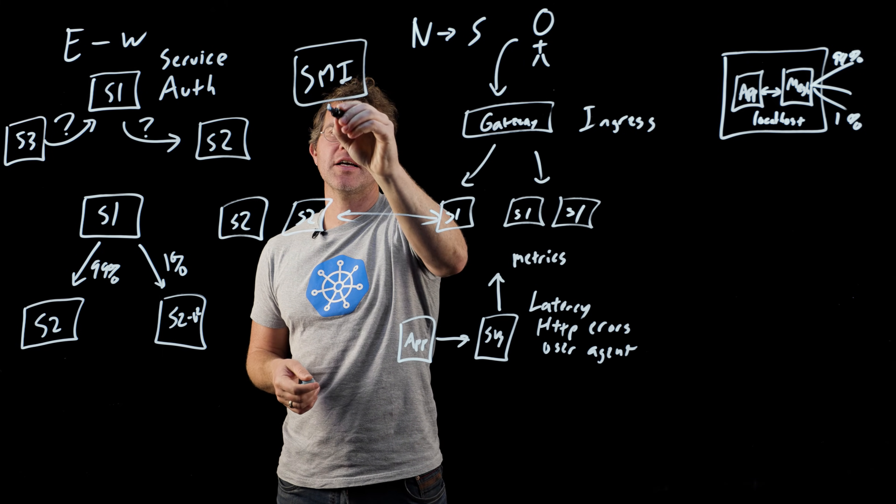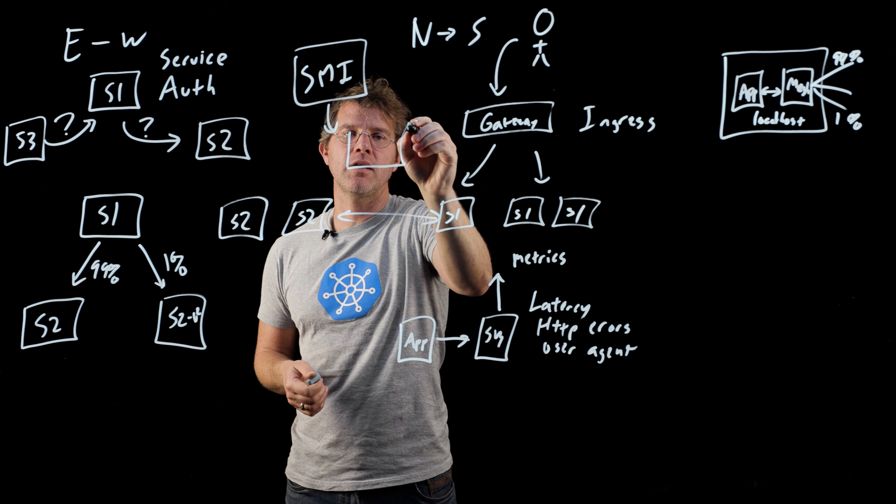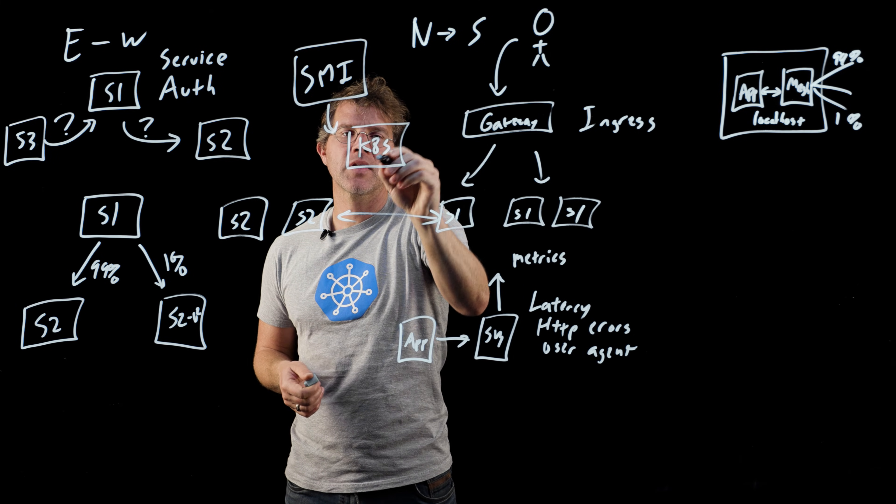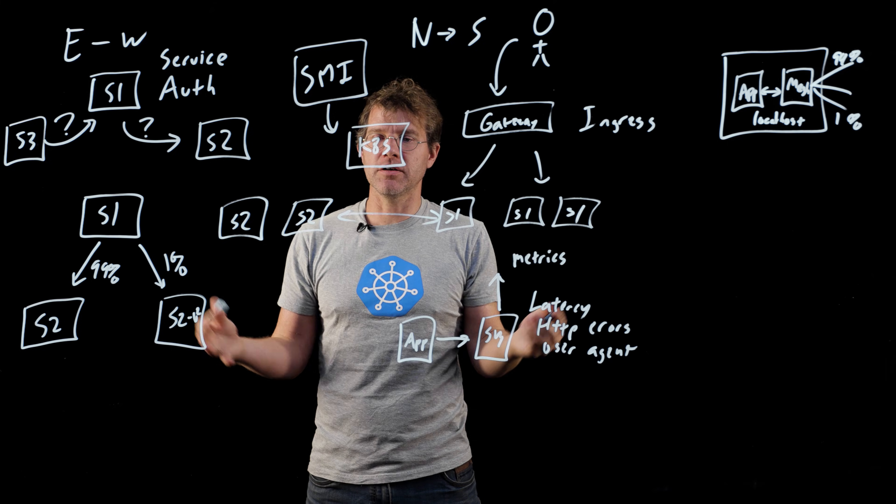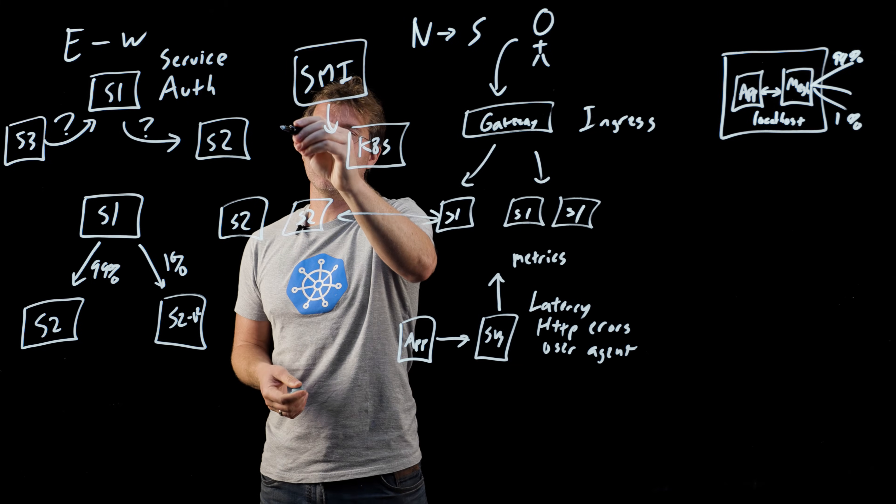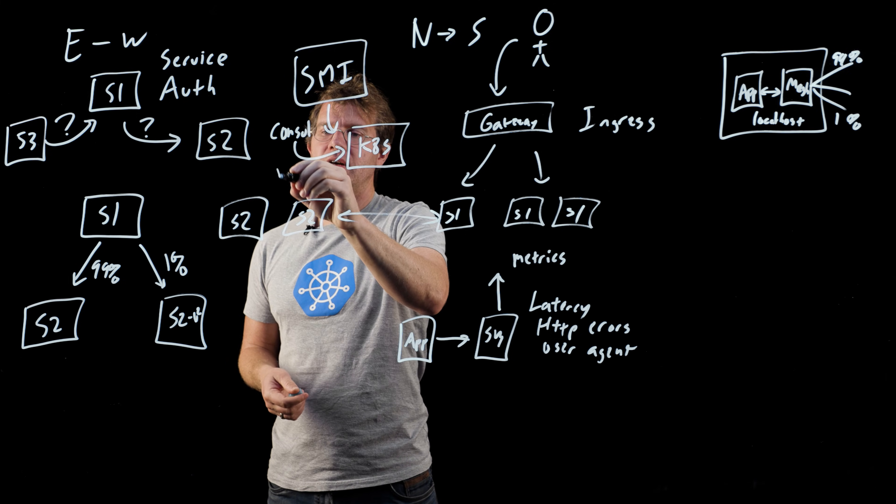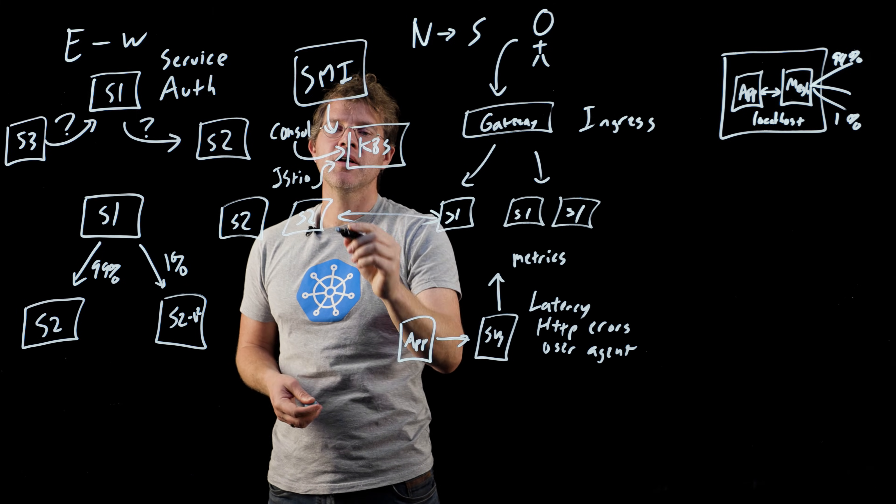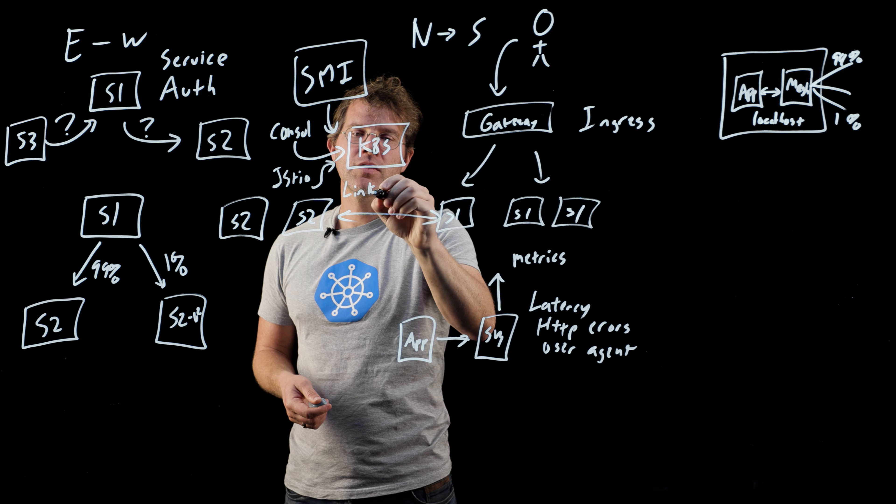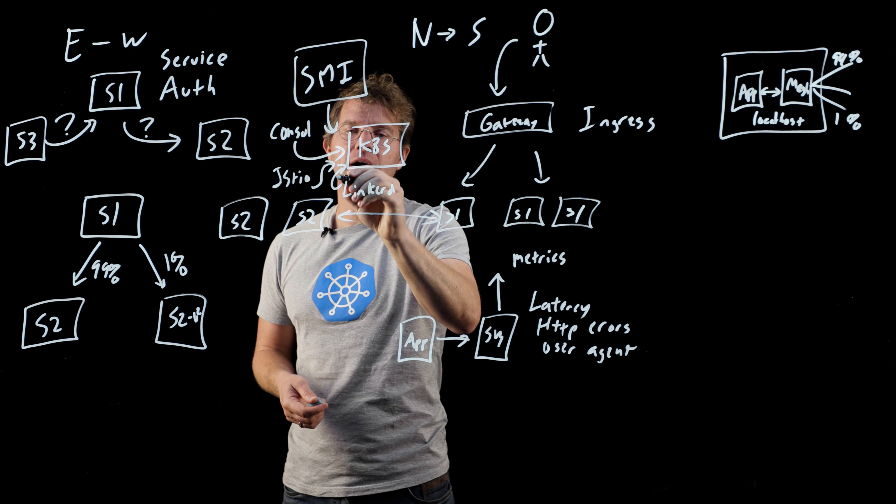The SMI is a collection of APIs that register themselves with Kubernetes, and then there are providers that implement those things. You can have Consul implement those APIs, you can have Istio implement those APIs, you can have Linkerd implement those APIs.